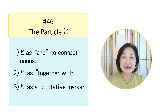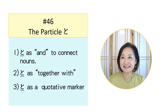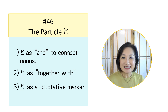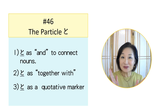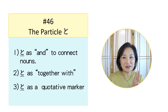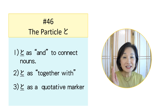Be sure to watch until the end of this lesson to learn how to use them correctly. In beginner level Japanese, you learn three functions of the particle TO. Number one, it connects nouns like りんごとおれんじ, apples and oranges. Number two, it means 'together with': 友達と日本に行きます, I go to Japan with my friends. And number three, it acts as a quotative marker: 日本語は楽しいと思います, I think that Japanese is fun.